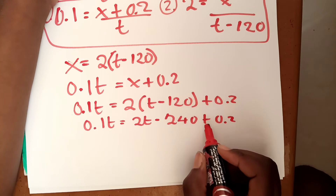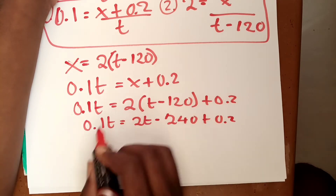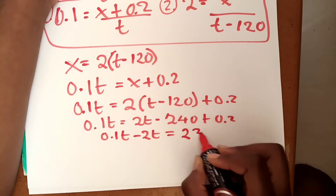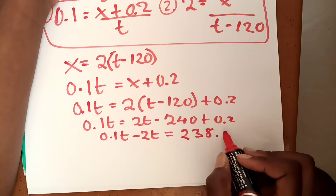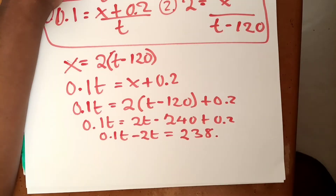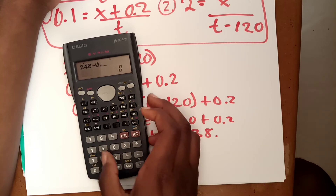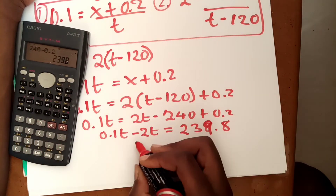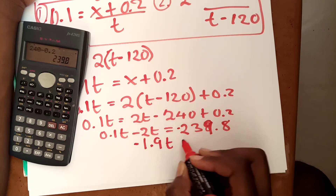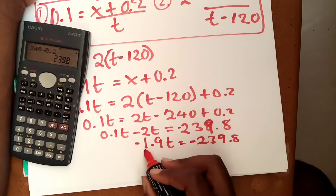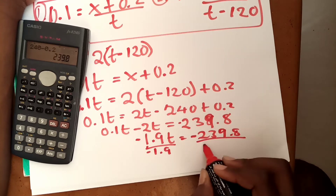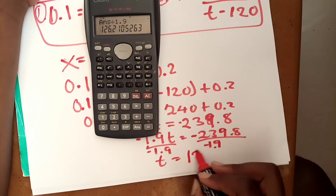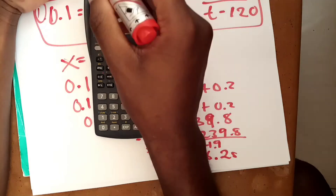Rearranging: 0.1t minus 2t equals negative 240 plus 0.2, giving negative 1.9t equals negative 239.8. Dividing both sides by negative 1.9: t equals 239.8 divided by 1.9, which equals approximately 126.2 seconds. That is the time the tortoise spent in the race.